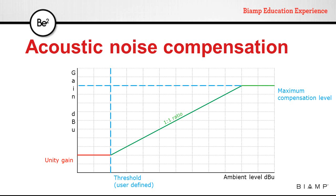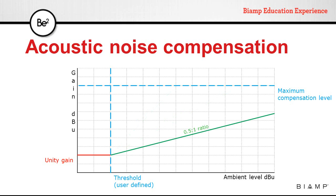Acoustic noise compensation allows using other ratios. This will make the system increase the level at a higher rate than the noise floor, or if the ratio is below, the signal will increase at a slower rate.